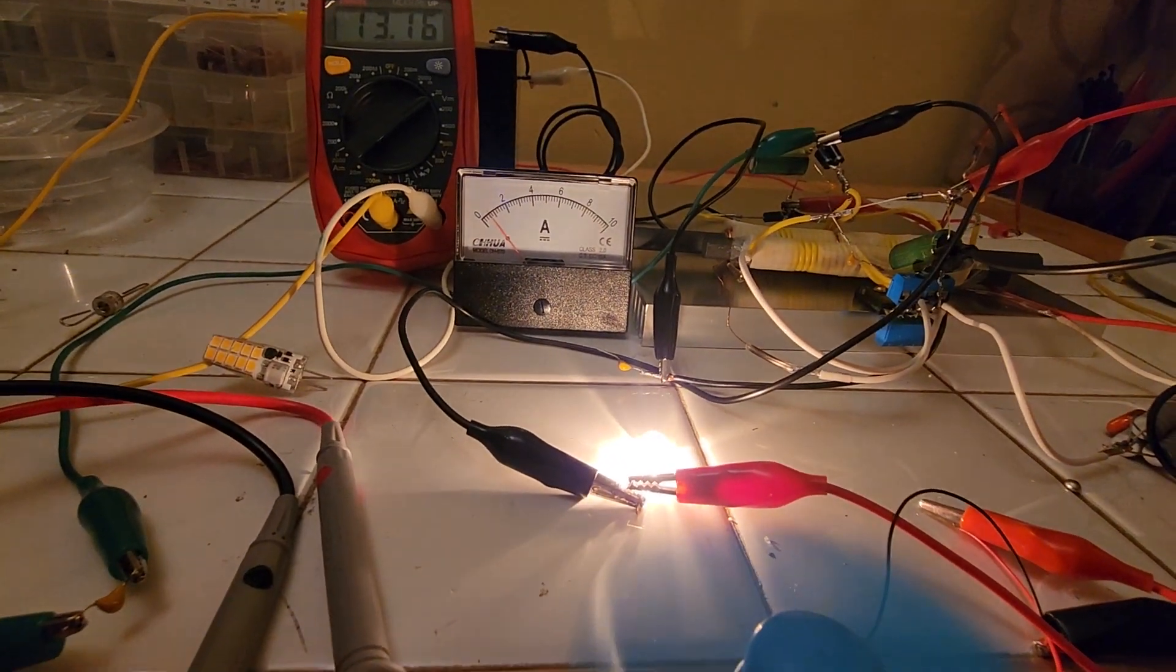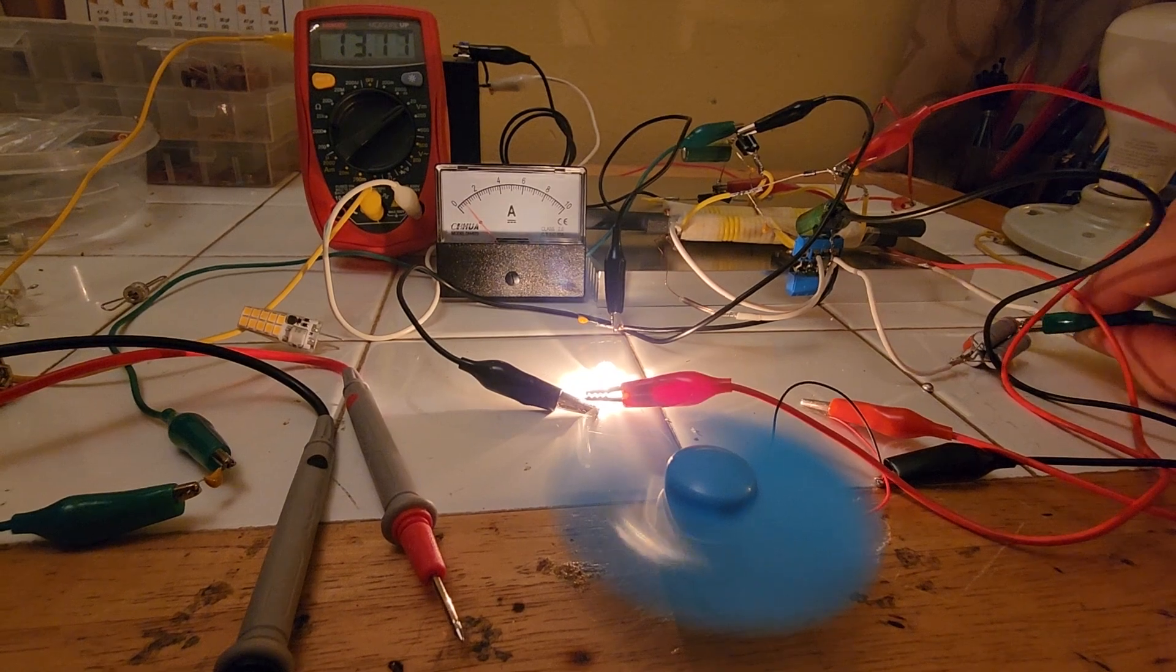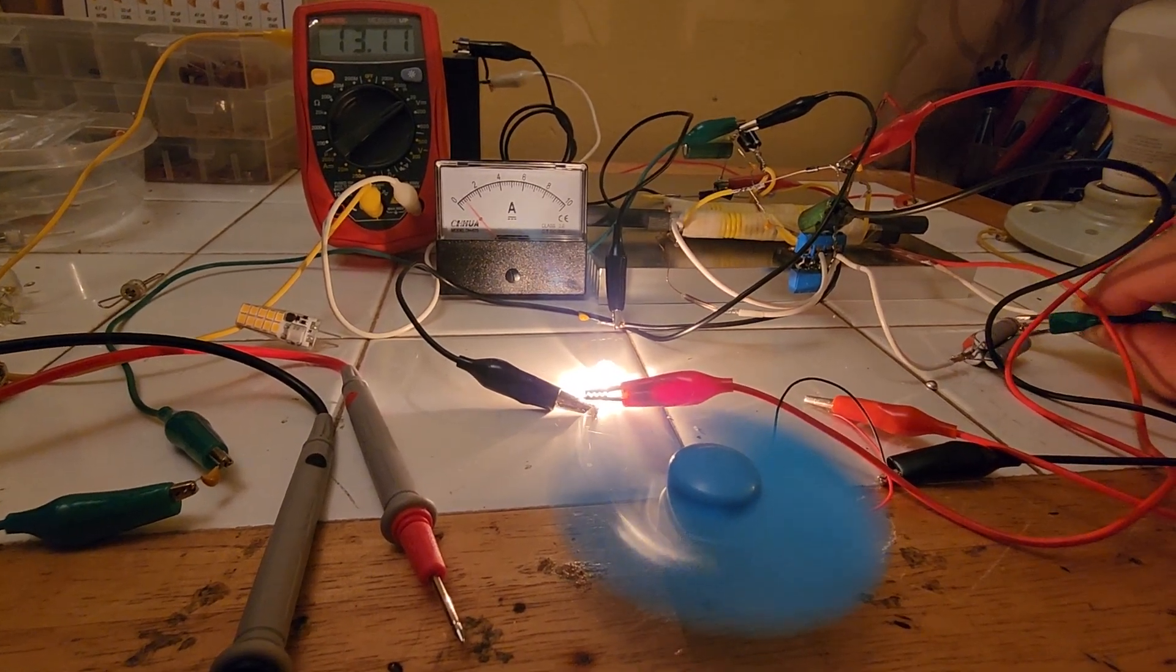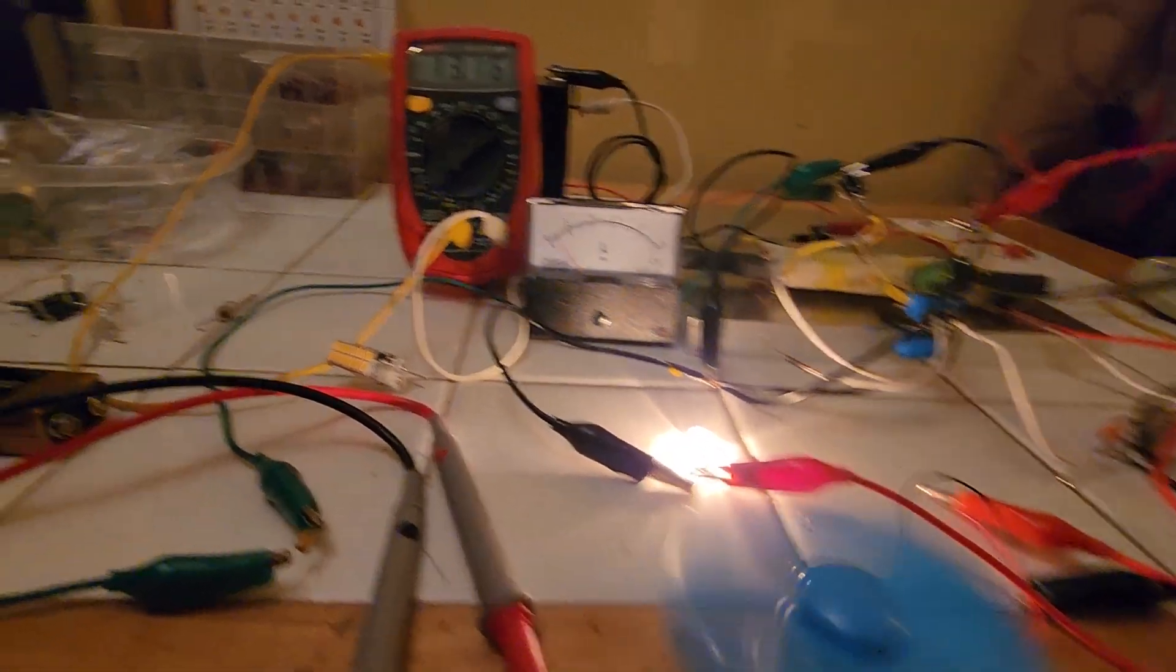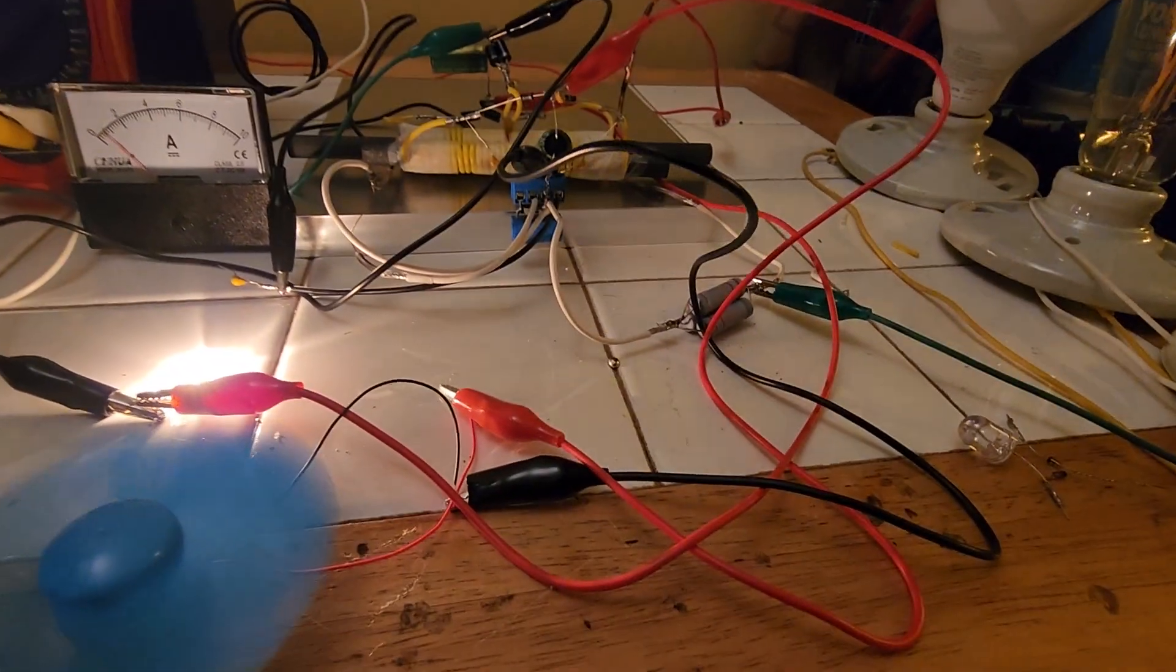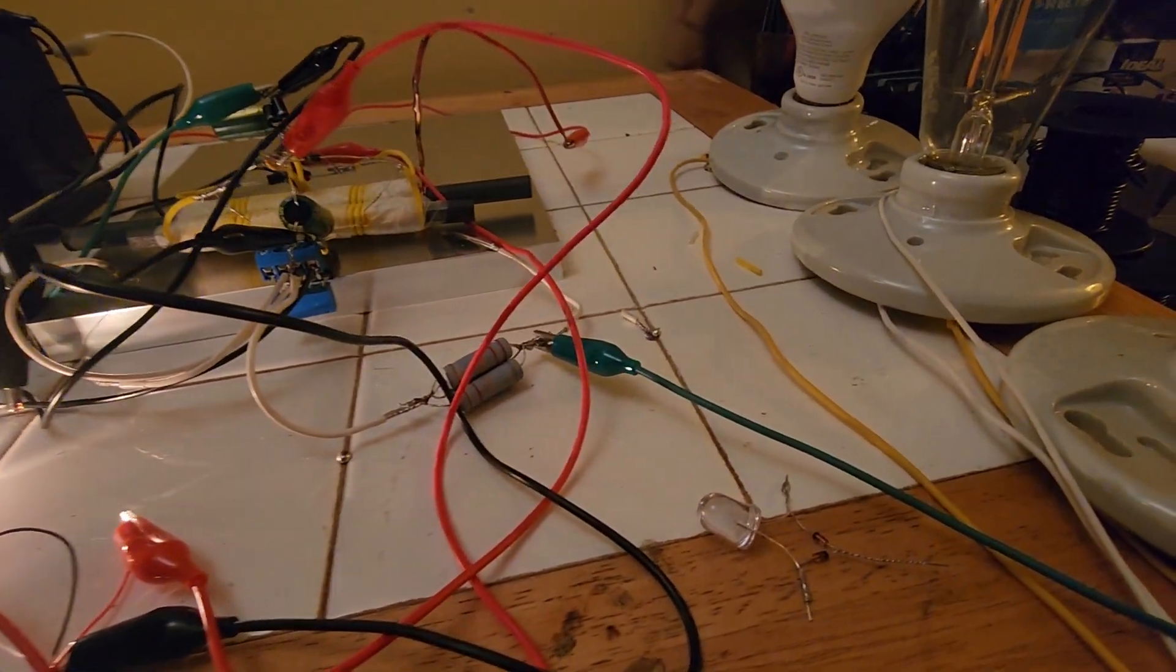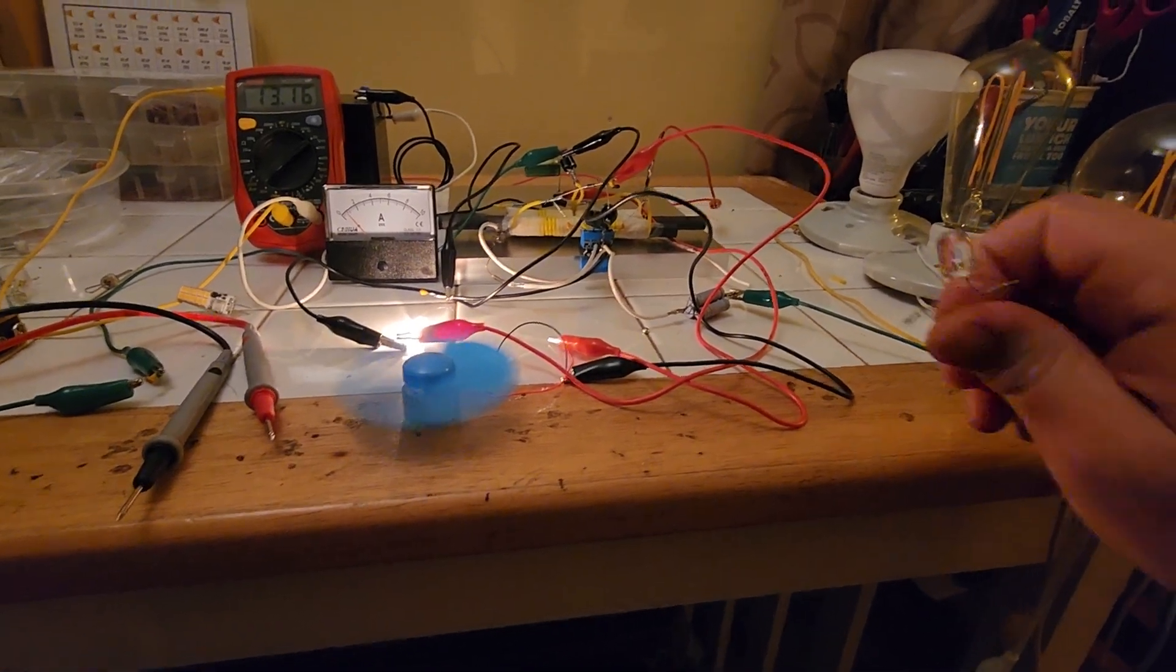Depending on how heavy you earth ground this part of the circuit will determine your negative resistance phenomenon. Like right here, see how we consume more power without earth grounding. Now I will connect the earth. The loads get brighter and we consume less power with that heavy earth ground right there. I wonder what would happen if we grounded it into a lake.